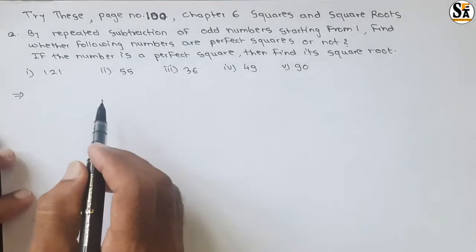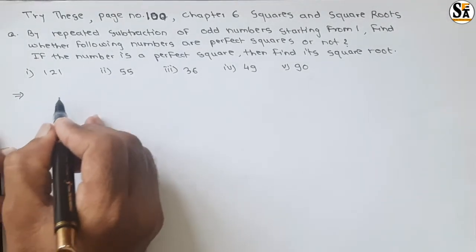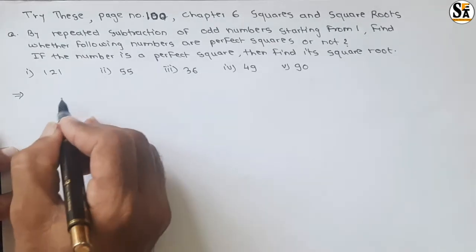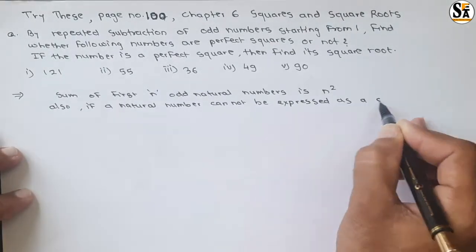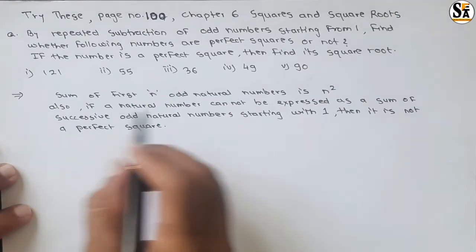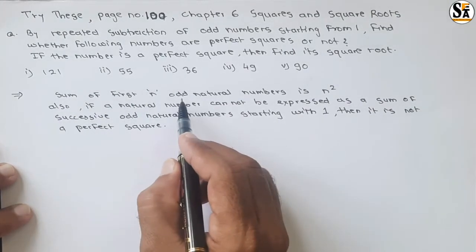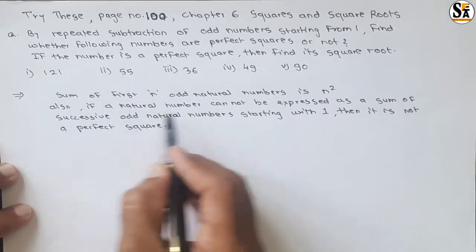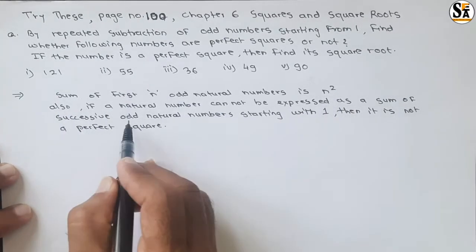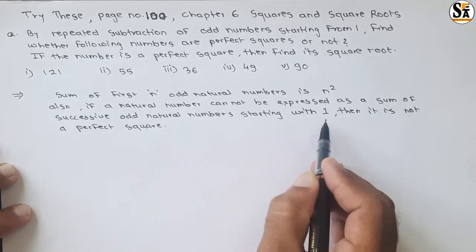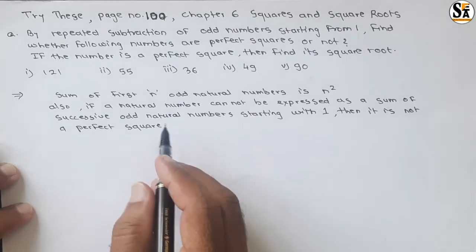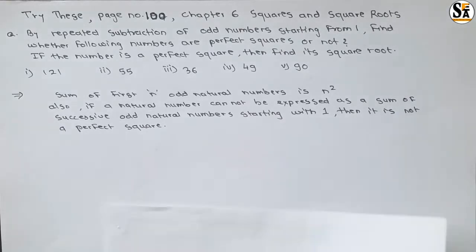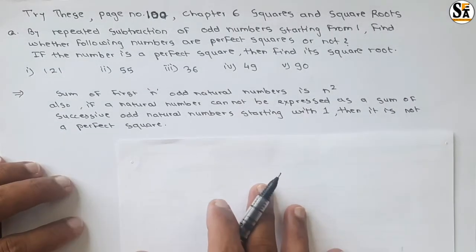There is one rule: the sum of the first n odd natural numbers equals n squared. Also, if a natural number cannot be expressed as a sum of successive odd natural numbers starting with one, then it is not a perfect square.